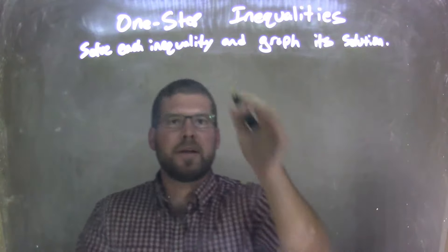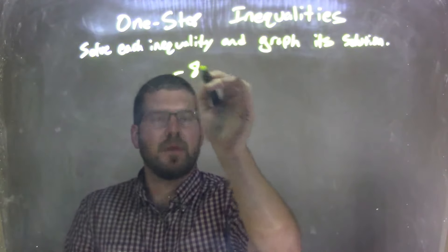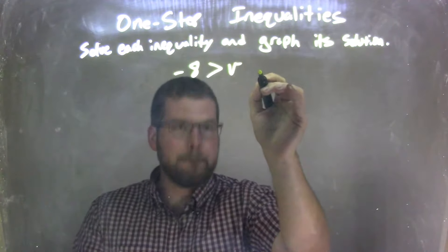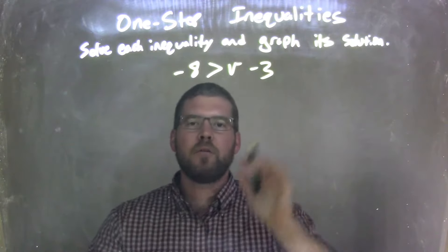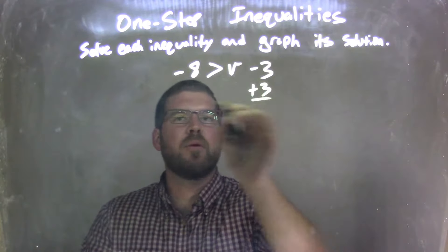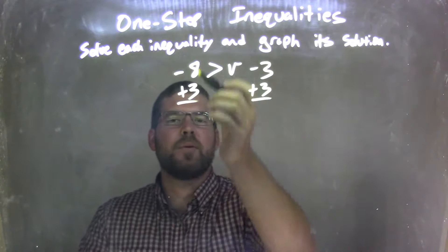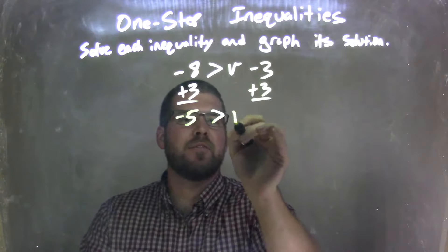So if I was given this inequality, negative 8 is greater than v minus 3. Well, my first step is I need to add a 3 to both sides. That leaves me with negative 8 plus 3 to be a negative 5. That's greater than v.